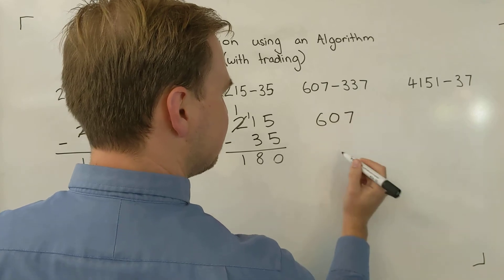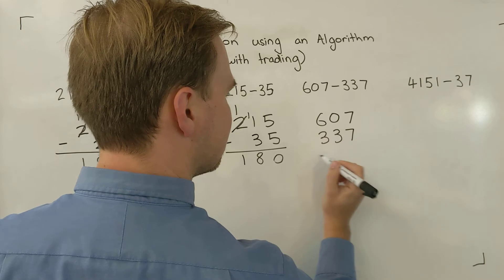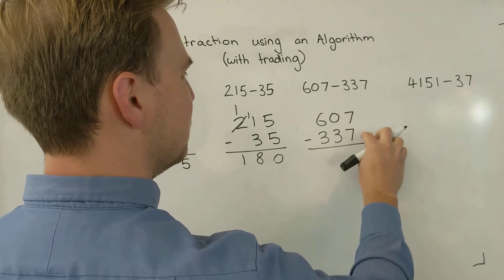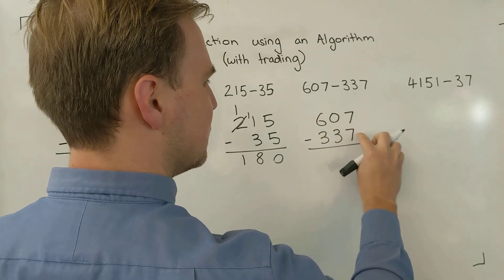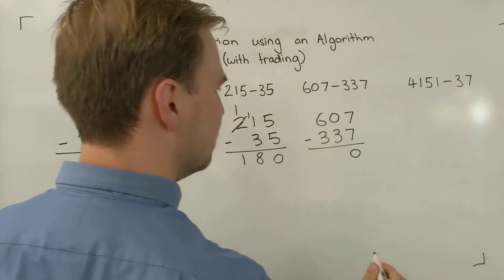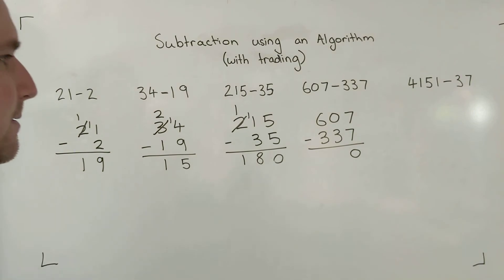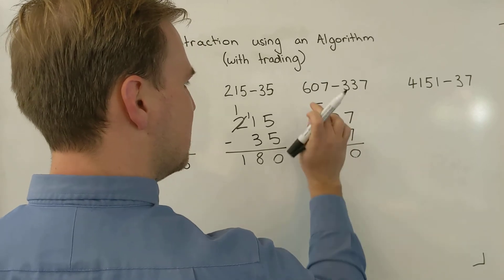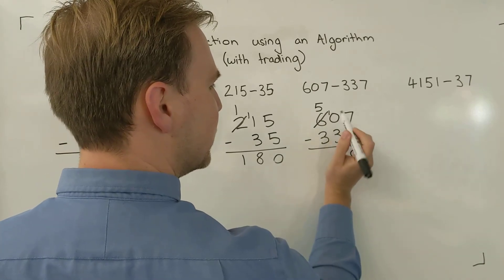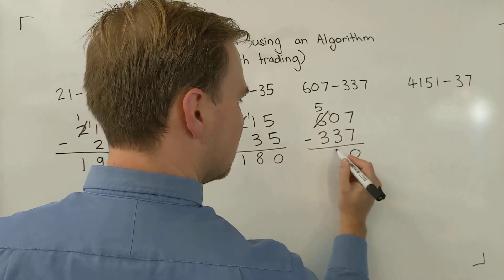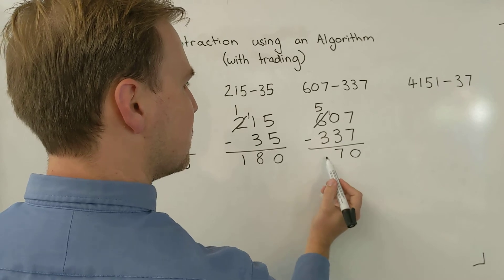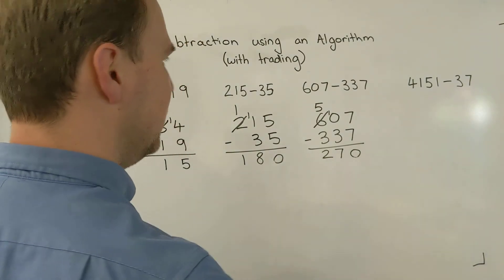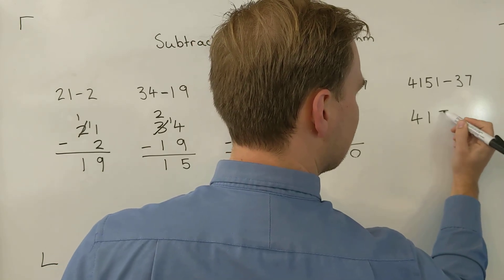607 take away 337. Starting with the ones column: 7 take away 7 — easy, that leaves me with zero. Then 0 take away 3 — I can't do it. I'm going to need to trade. I'll go to the next column, take one away, write the new number there so I don't forget, and bring that one down. Now 10 take away 3 leaves me with 7. In the hundreds column: 5 take away 3 leaves me with 2. Answer: 270.